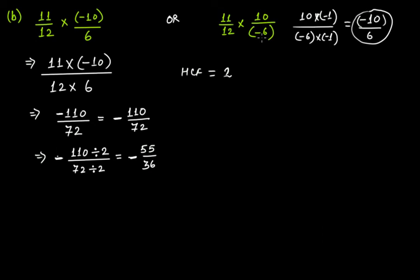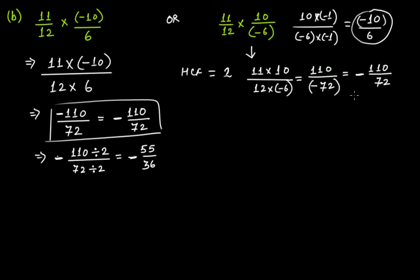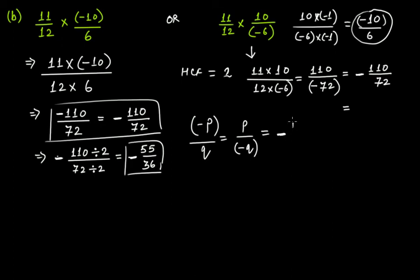If we had multiplied 11 times 10 and 12 times minus 6, we would have got 110 over minus 72 — everything is the same. Remember, we can also write the minus sign in the numerator position, so minus 110 over 72. Dividing gives the same result. Remember that minus p over q equals p over minus q, and both equal the negative of p over q — all these forms are equal, so use whichever form you want.